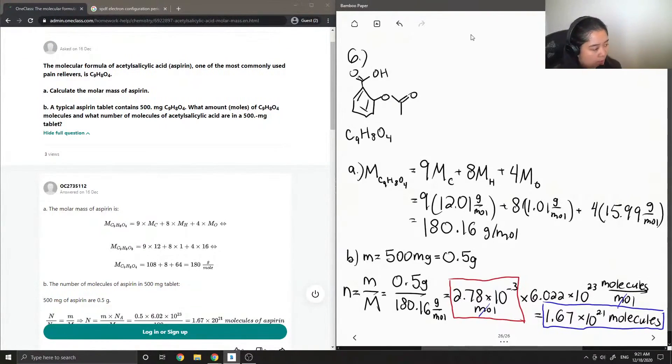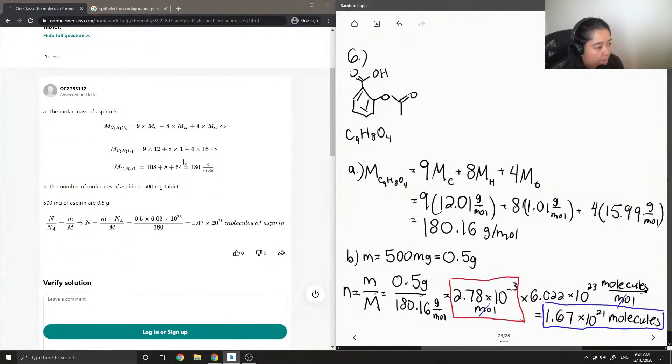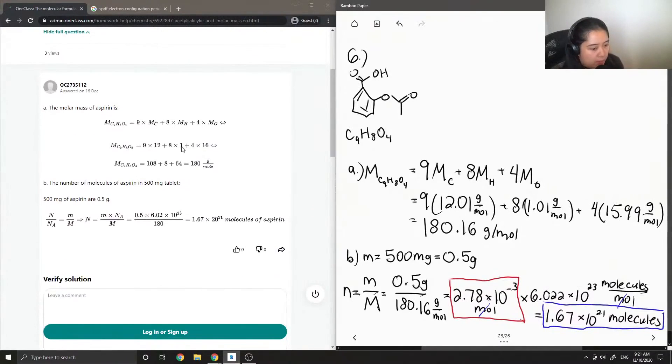Okay, so let's see what the junior tutor said. The molar mass of aspirin is 9 times the molar mass of carbon, plus 8 times the molar mass of hydrogen, plus 4 times the molar mass of oxygen. And they had less decimal places, but still ended up with around 180 grams per mole.